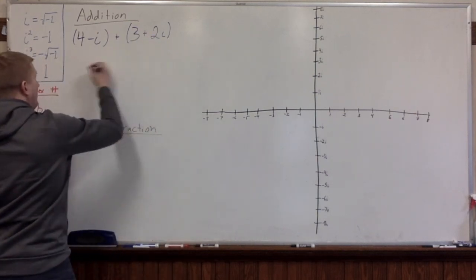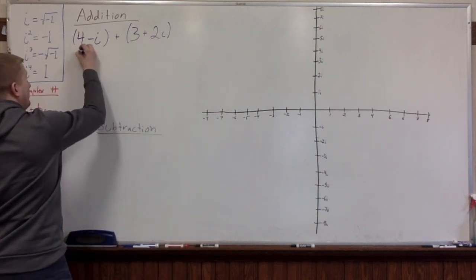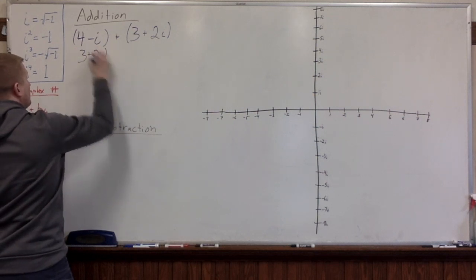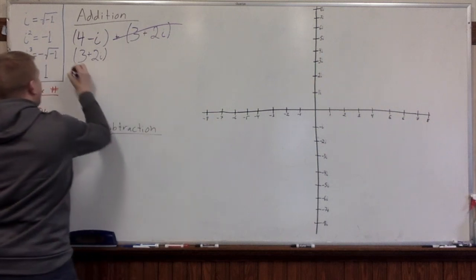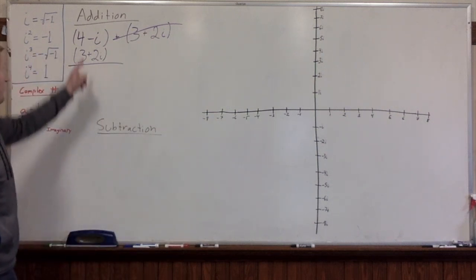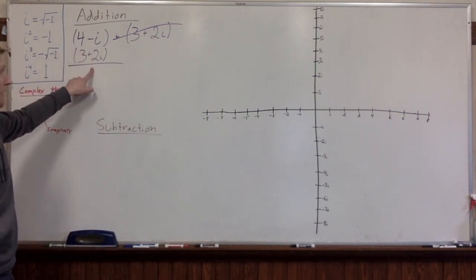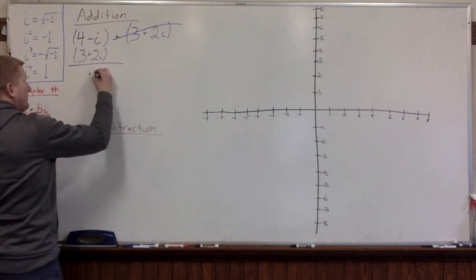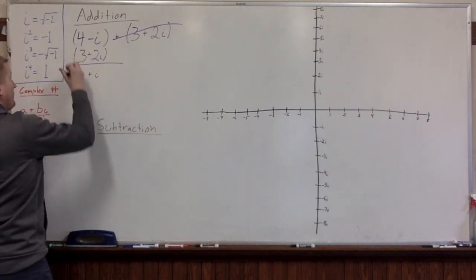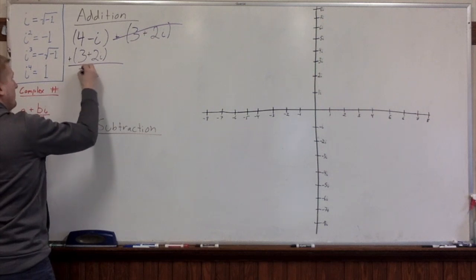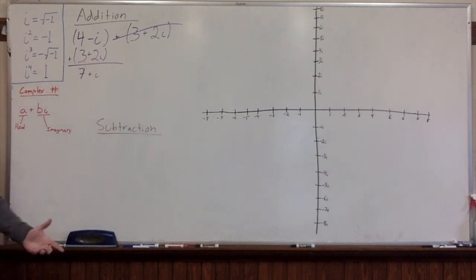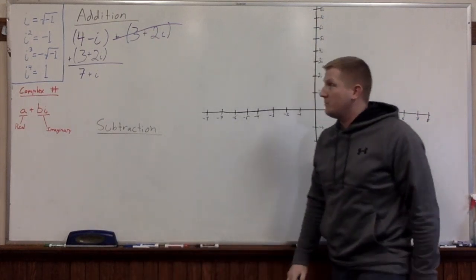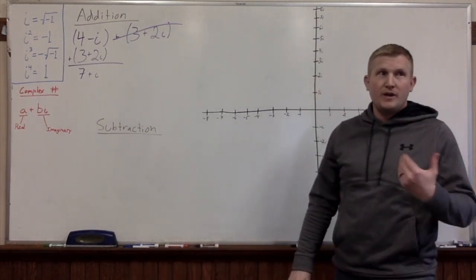It might be a little bit easier to write them on top of each other. We have negative i plus 2i, which is going to be positive 1i. And 4 plus 3 is just 7. So the sum of those two complex numbers is 7 plus i.